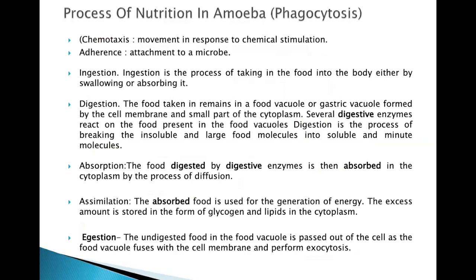The process of nutrition in amoeba is called phagocytosis. There are two initial processes: chemotaxis, meaning they move in response to chemical stimulation, and adherence, meaning they attach to the microbe. Ingestion is the process of taking food into the body by swallowing or absorbing it. The food taken in remains in the food vacuole formed by the cell membrane and cytoplasm, where several digestive enzymes act on it.